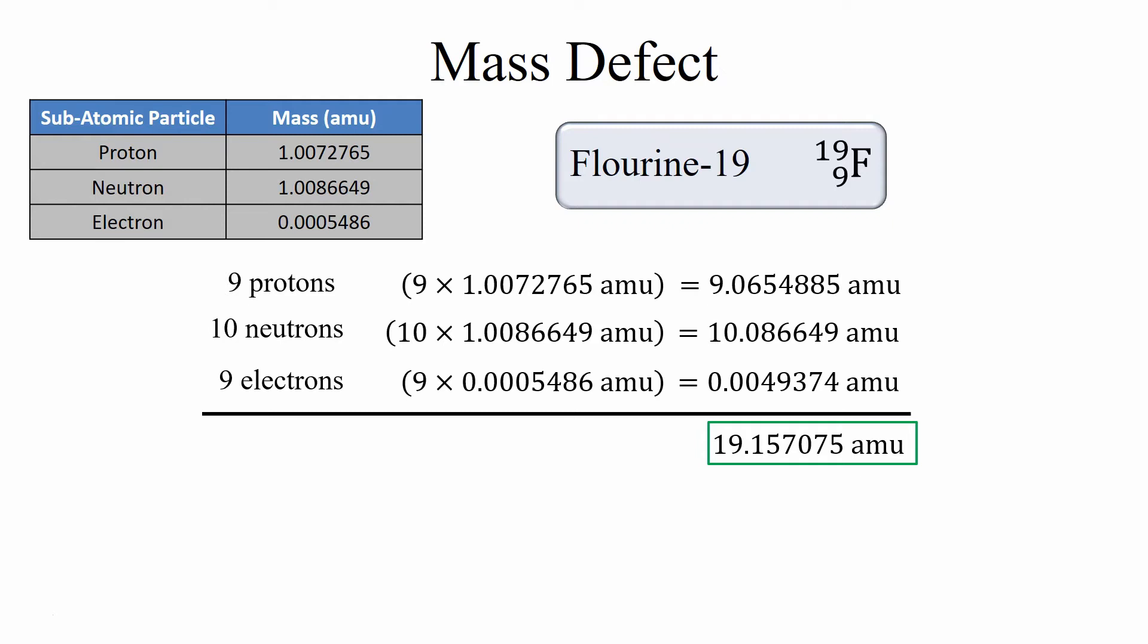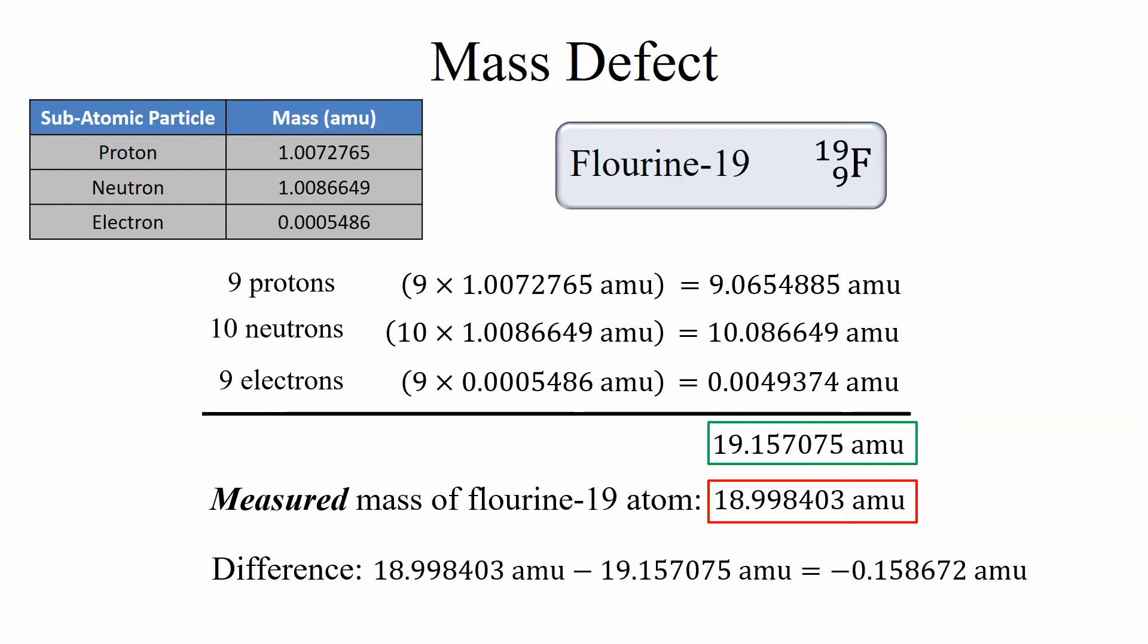Now if we measure the actual mass of the fluorine-19 atom we get a slightly different number. The difference is what's known as the mass defect.